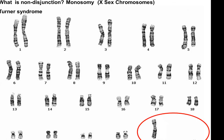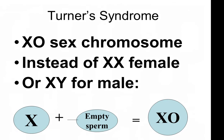One tidbit about Turner's syndrome: you'll see the X plus an empty sperm cell. The non-disjunction may have happened in the sperm cell — it could have been the sperm cell missing the Y, or it could have been the female not sending an X and a normal X chromosome coming from the male. There's more than one possible explanation for this.